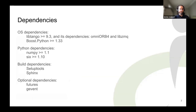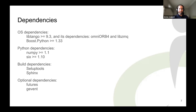Dependencies: we depend on the Tango C++ library at least version 9.3, and all its dependencies like OmniORB and ZMQ. We need Boost Python for the extension. Python dependencies include NumPy and six. You can build PyTango without NumPy but nobody is still doing that, and once we get into the PyBind11 work we'll definitely require NumPy. For the green modes there are optional packages — if you want to use the futures green mode or the GEvent green mode, install those packages.